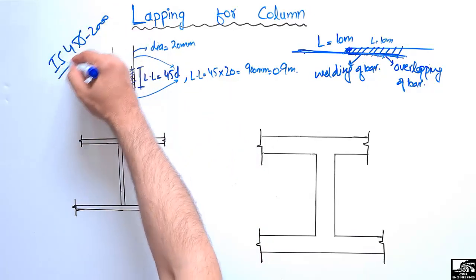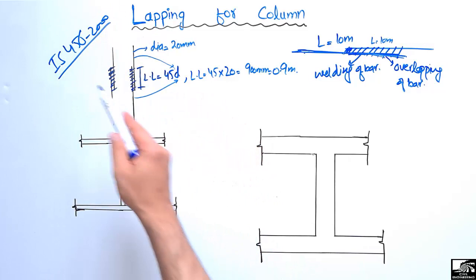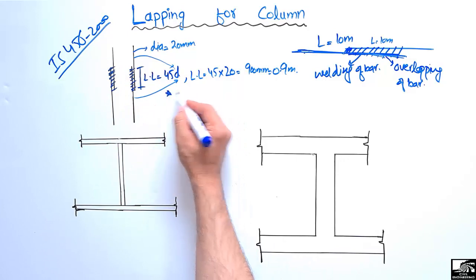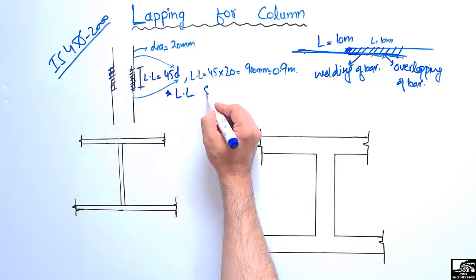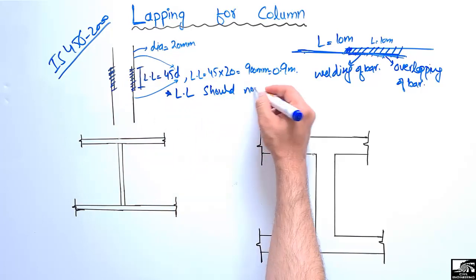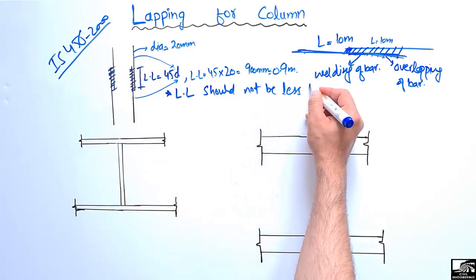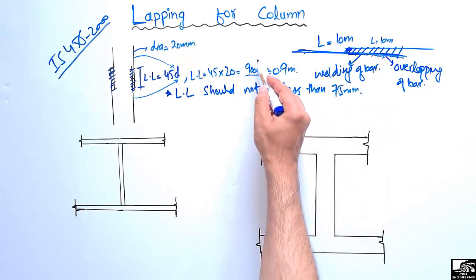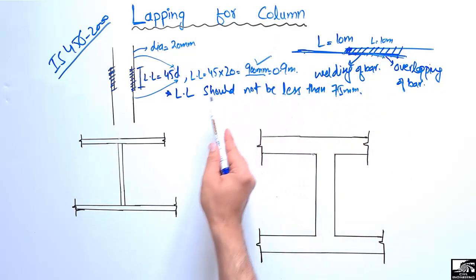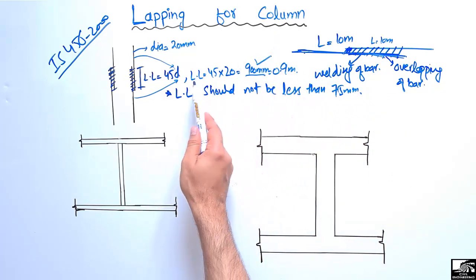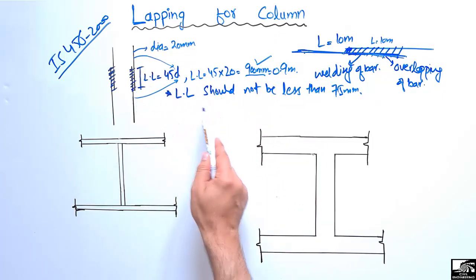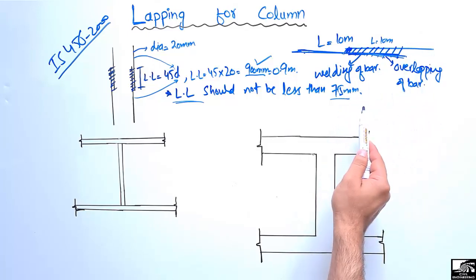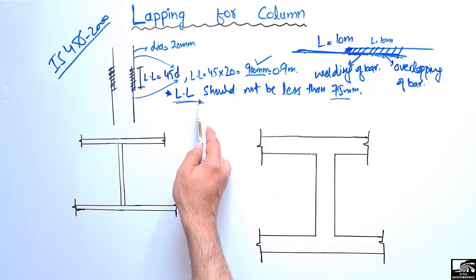These standard specifications are according to IS 456:2000 — all details discussed today are according to Indian Standard 456:2000. Also, it should be kept in mind that this lapping length should not be less than 75 mm. In our example we have 900 mm, so that is fine. But if a formula gives a value like 60 mm, we must not use that — the minimum lapping length should be 75 mm or greater.